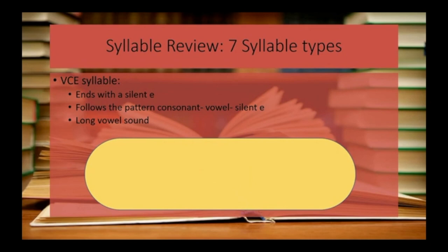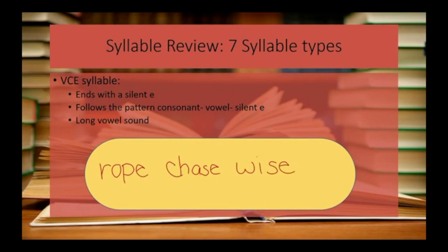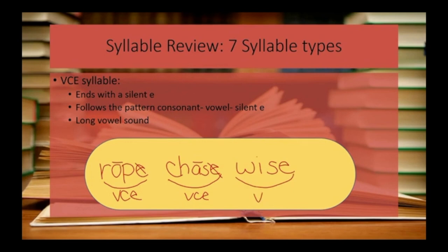Let's look at a couple more examples of some VCE words: chase, rope, wise. As I mark these words, I would like for you to mark them on your own page. We know rope is a VCE pattern because of the OPE — the E is silent and it makes the O long. In chase, the VCE pattern is in ASE; the E is silent and makes the A long. In wise, the VCE pattern is in ISE — the E is silent and it makes the I long.